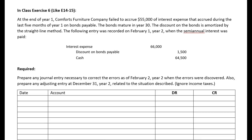In the straight-line method, instead of calculating interest expense first and backing into the discount, we calculate the cash payment and then take the total discount divided over 30 years. Every single interest payment, we record the exact same amount of discount. So the interest expense is simply the cash payment — face value times stated rate times time — plus an equal portion of the discount each period.